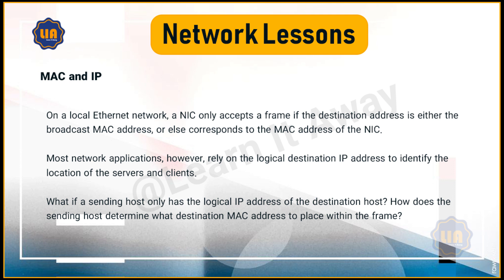On a local Ethernet network, a NIC only accepts a frame if the destination address is either the broadcast MAC address, or else corresponds to the MAC address of the NIC. Most network applications, however, rely on the logical destination IP address to identify the location of the servers and clients. What if a sending host only has the logical IP address of the destination host? How does the sending host determine what destination MAC address to place within the frame?